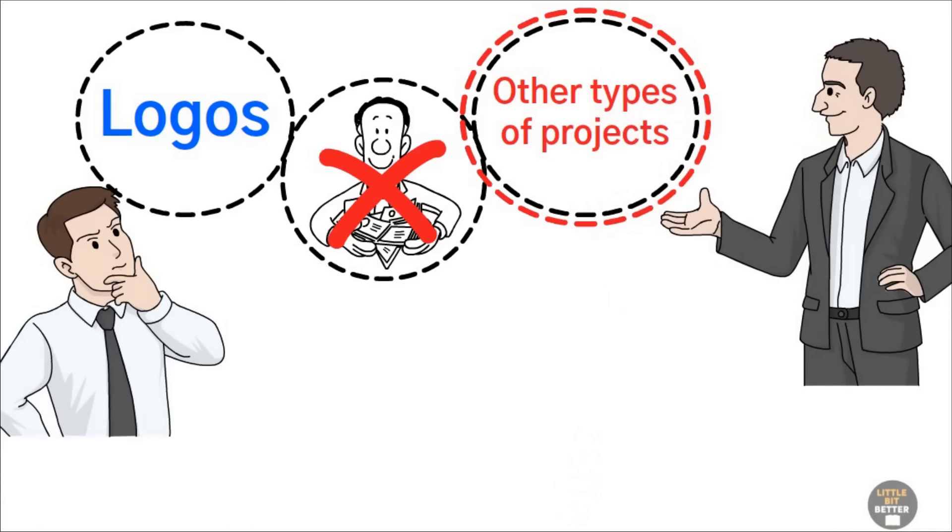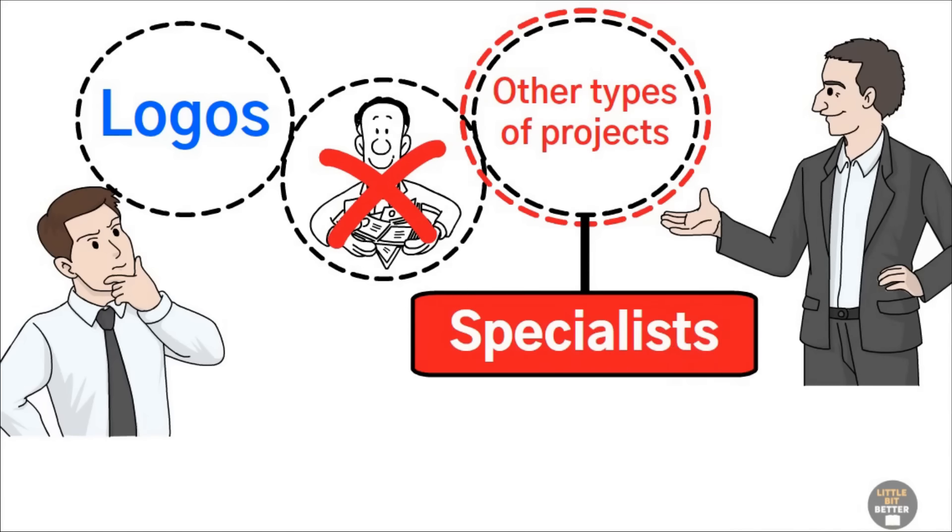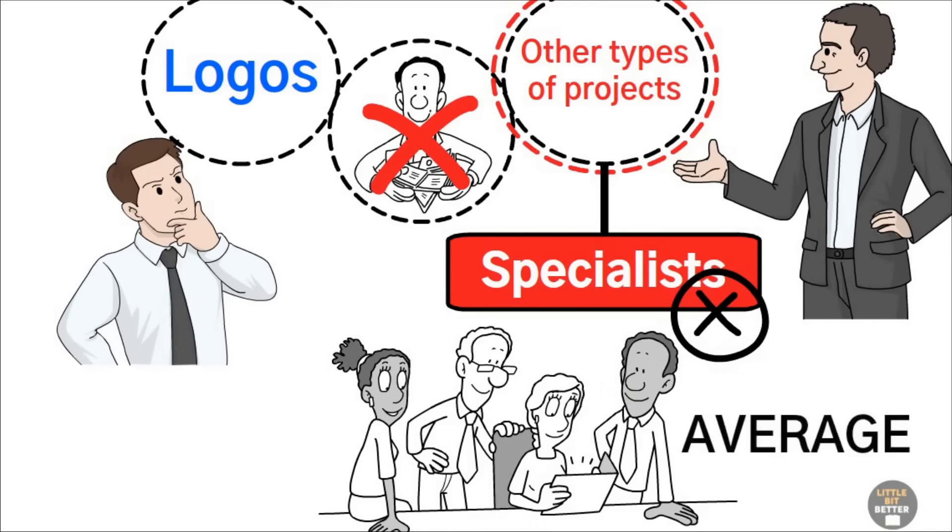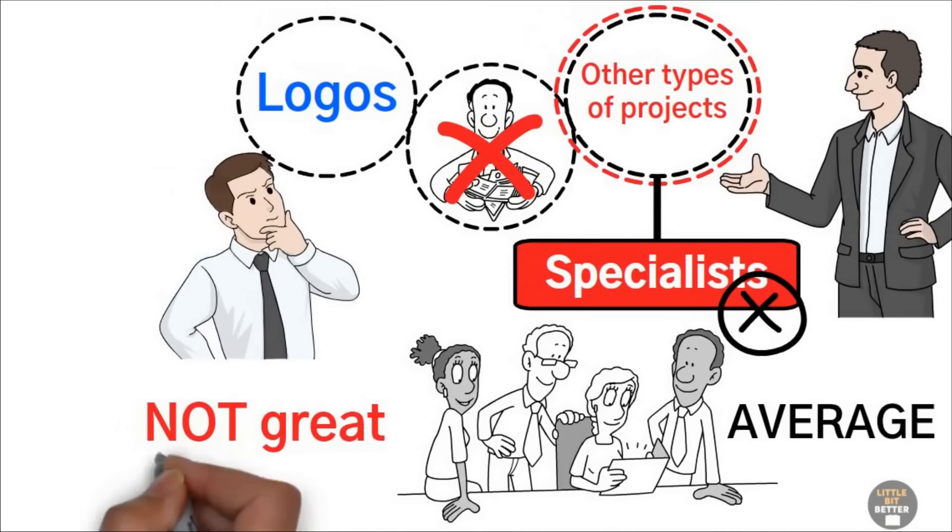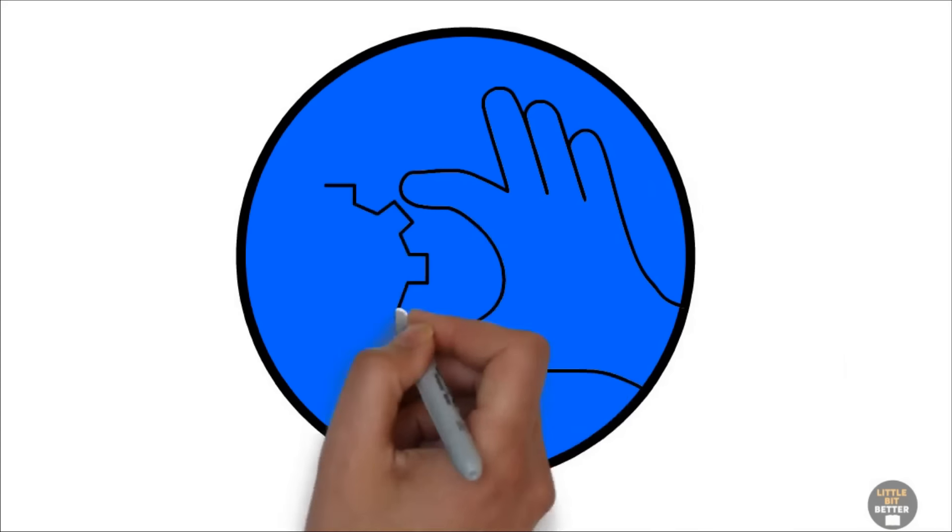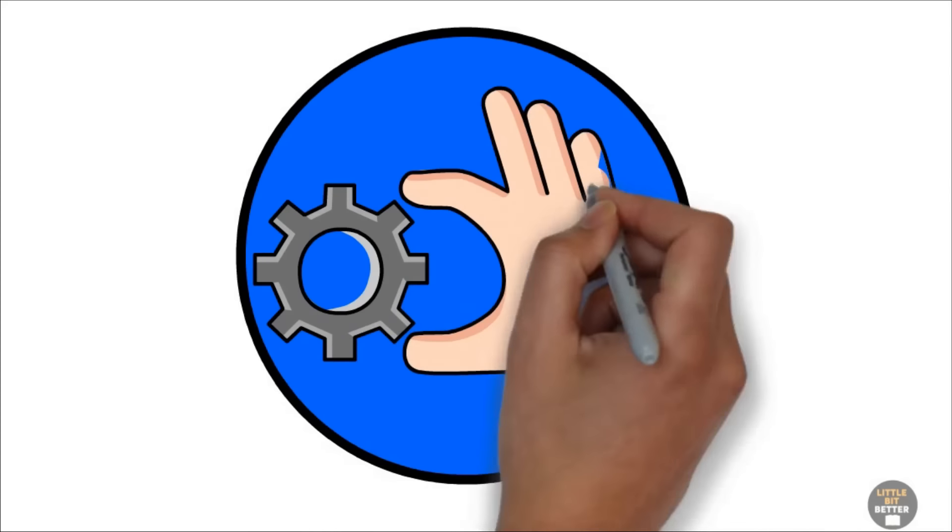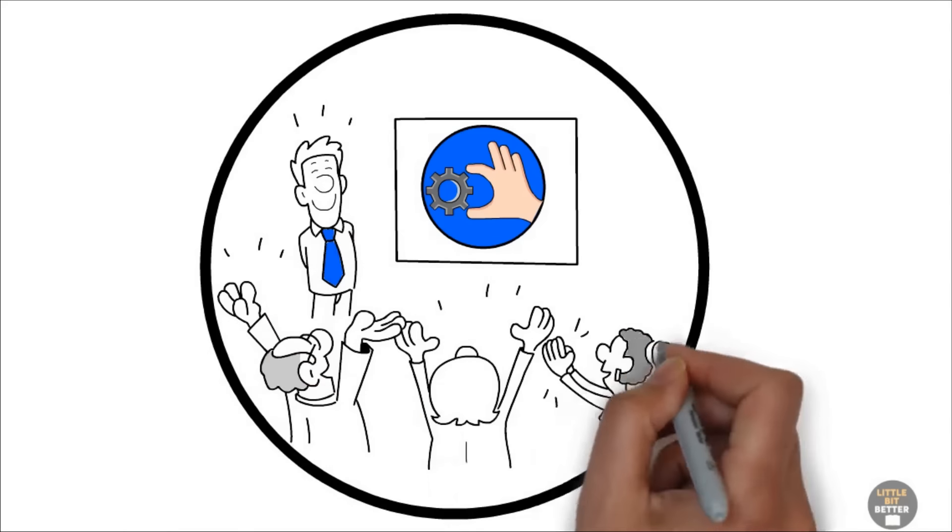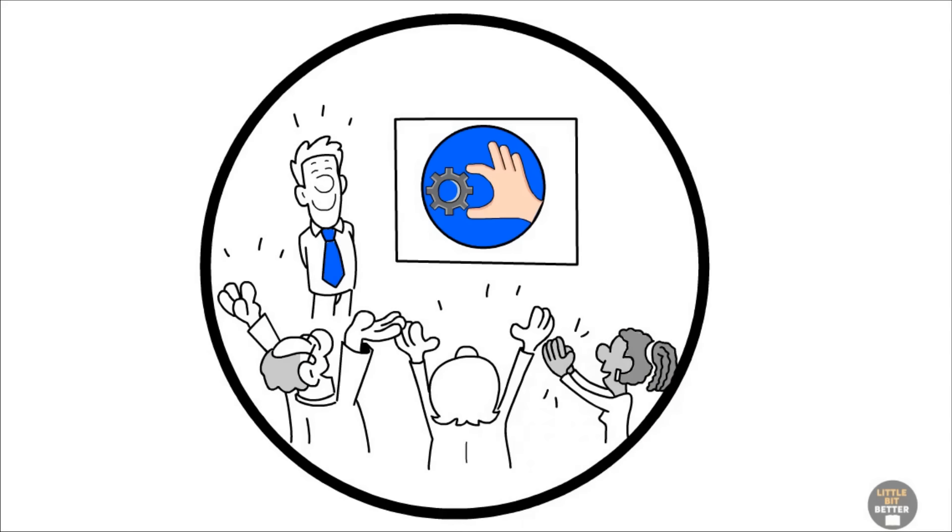You're trying to do too many different things. That means you need specialists, but you can't afford them. So you're stuck with a team that's just average at a lot of things, but not great at anything. And that's why your results are weak. If you focus on doing one thing well and hire specialists in that area, the quality of your work will improve. You'll stand out among your competitors and you will become more efficient in delivering your product.